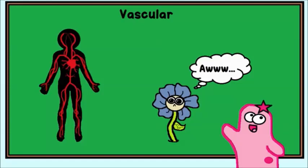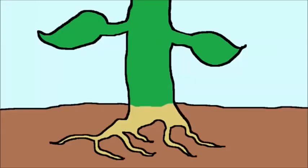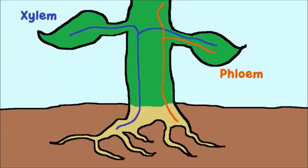When we're talking about a vascular system in plants, we're talking about two major types of tubes or vessels called the xylem and phloem.